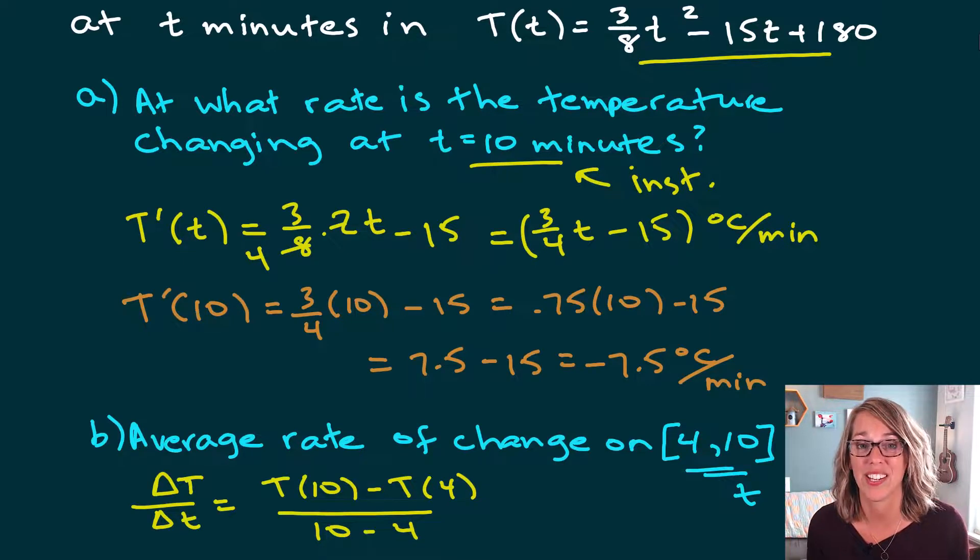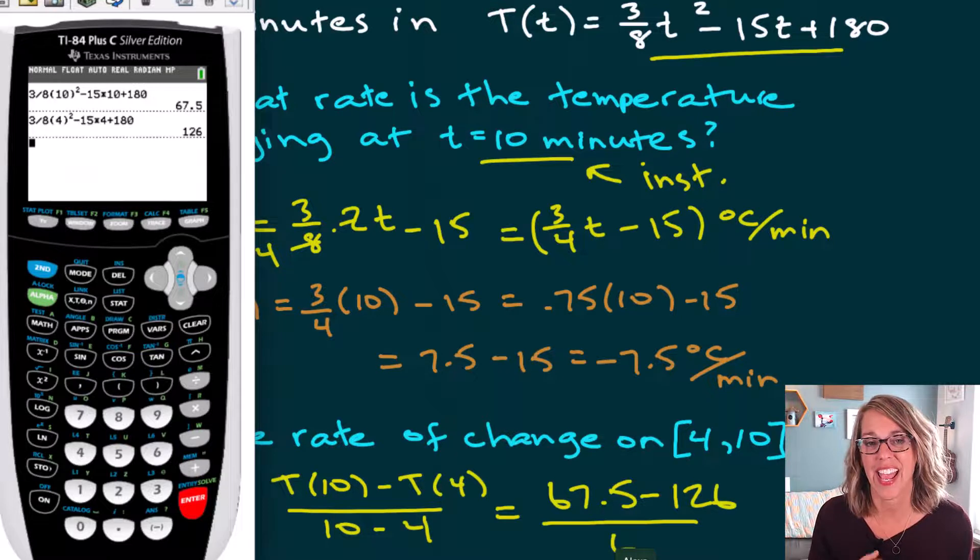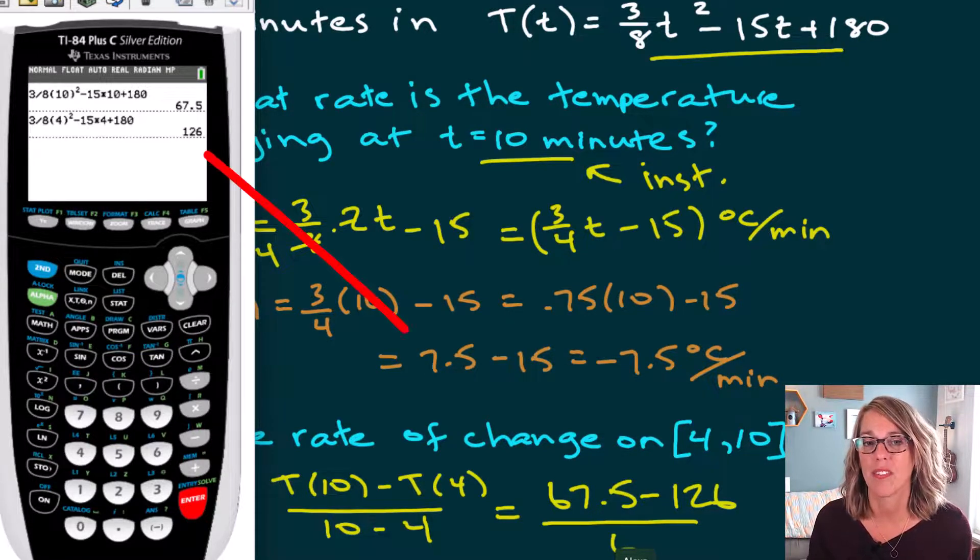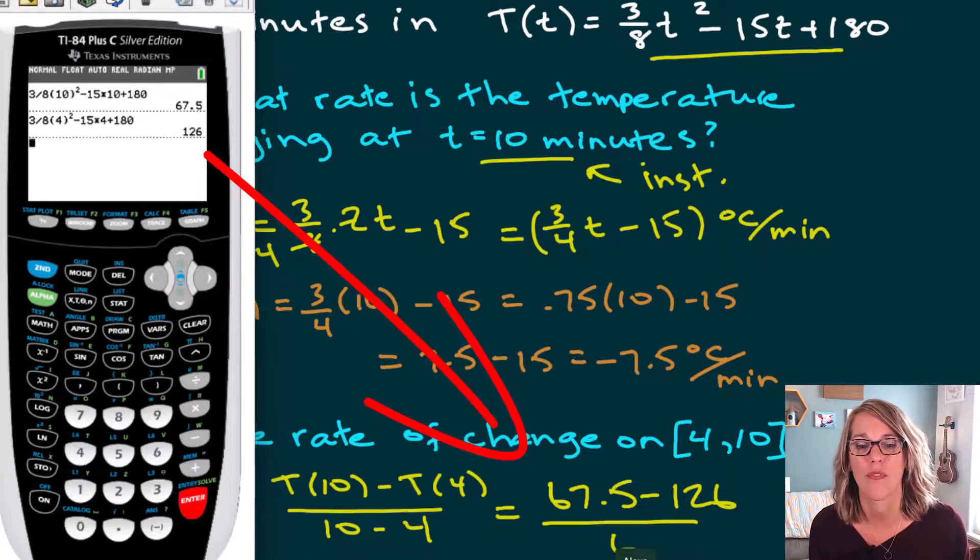So this is going to be the change in capital T over the change in lowercase t. So I want capital T for 10 minus capital T for 4 divided by 10 minus 4. I'm going to use my calculator to make quicker work of this. So putting both 10 and 4 into my function in my calculator gives me the values of 67.5 for 10 and 126 for 4.